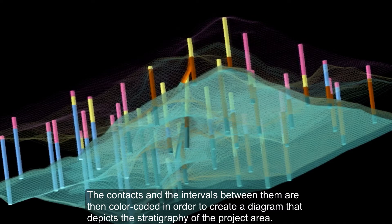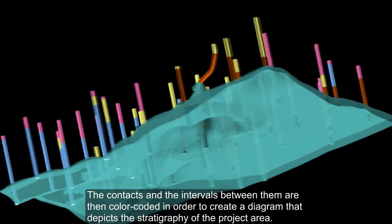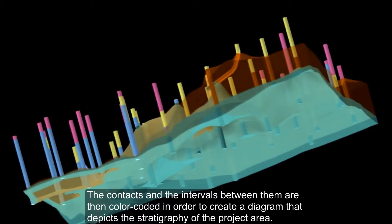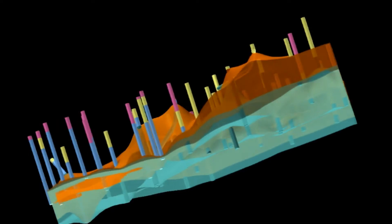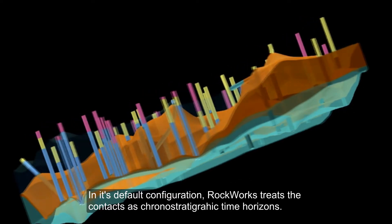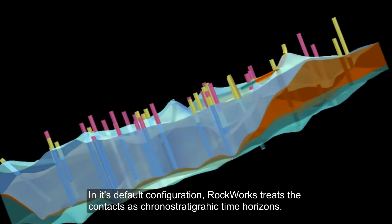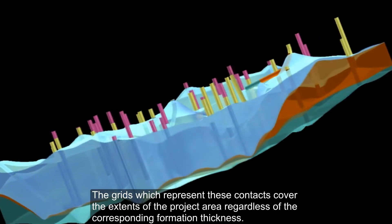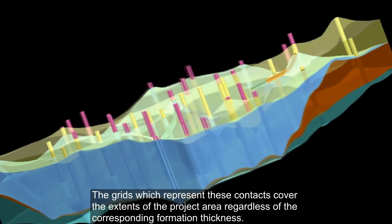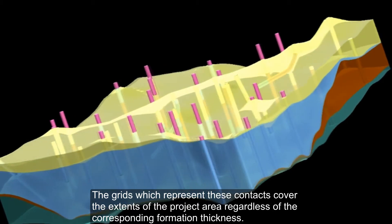These contacts and the intervals between them are then color-coded in order to create a diagram that depicts the stratigraphy of the project area. In its default configuration, RockWorks treats the contacts as chronostratigraphic time horizons. The grids which represent these contacts cover the extents of the project area, regardless of the corresponding formation thickness.